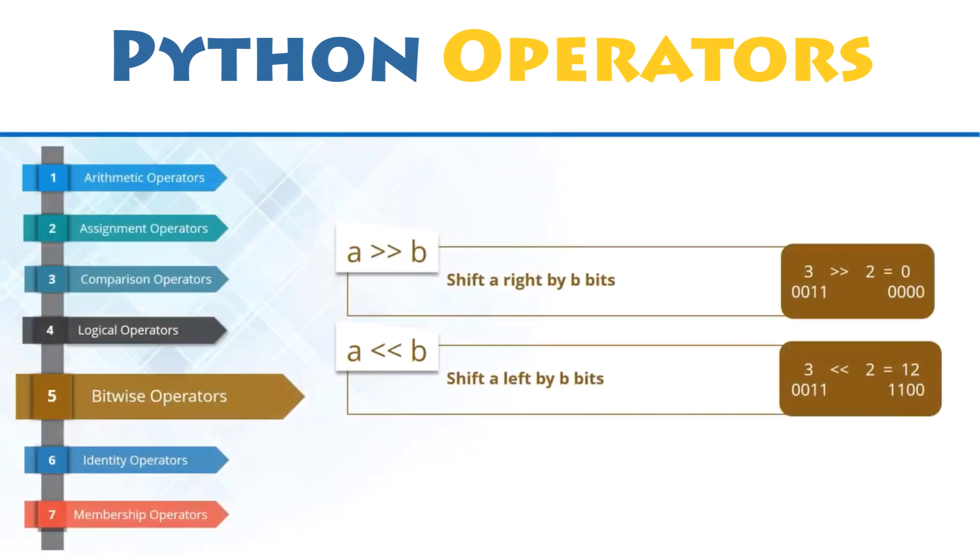Apart from these three operators, you have two more bitwise operators, which are right shift and left shift operators. What basically happens when this type of operand is used? First, the value is converted into its binary representation.